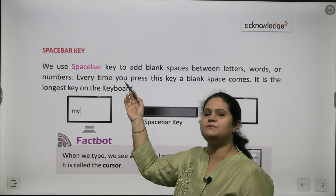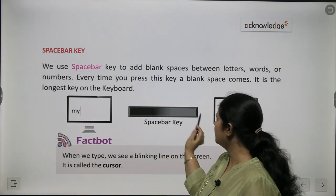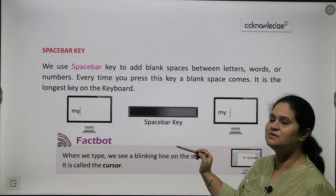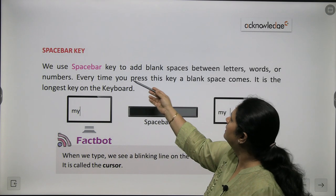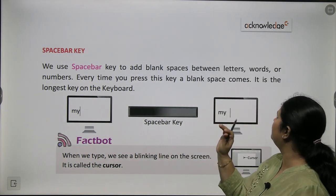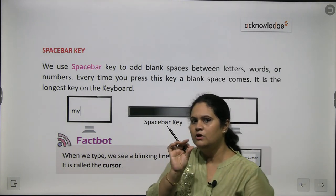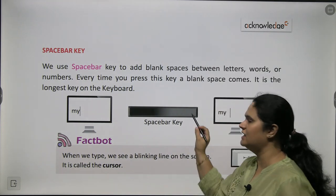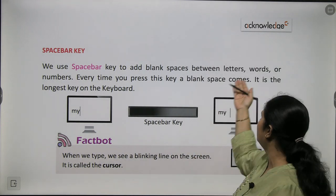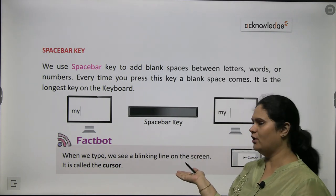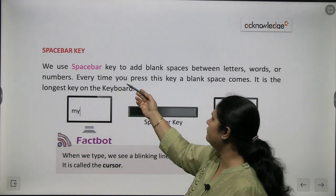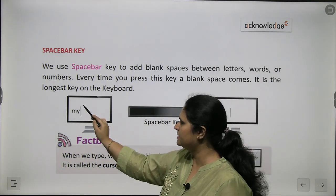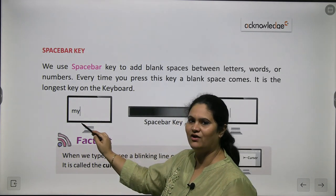Now we will talk about the space bar key. This is the longest key that you see on the keyboard. This space bar key is used to add blank spaces between words. Just like you leave some space while writing in your notebook, the space bar key is used to leave blank spaces between letters or words that you are typing on the computer. This blinking line on the screen is called a cursor.